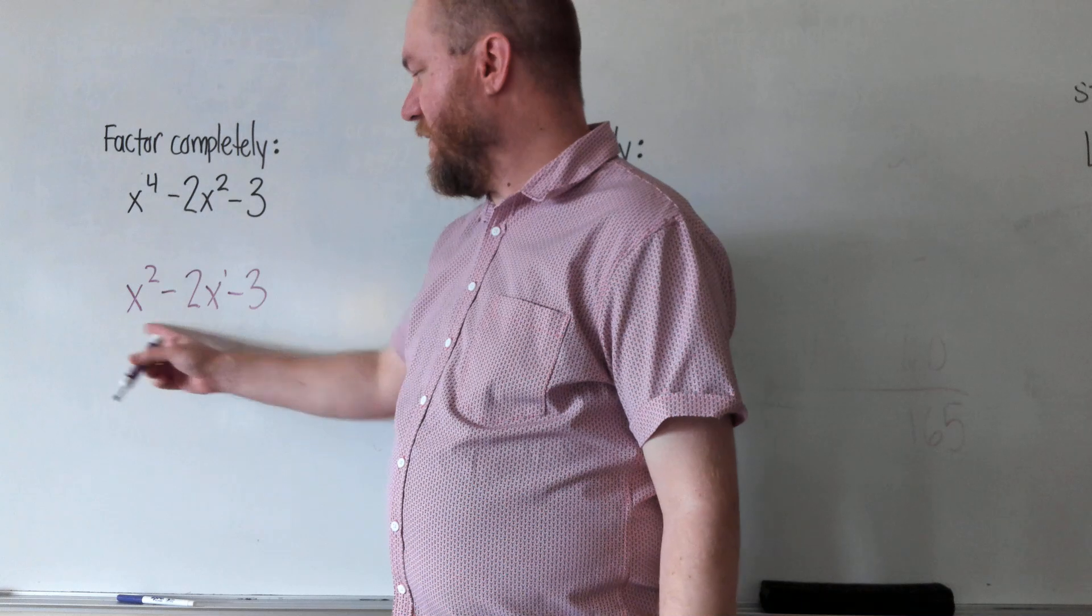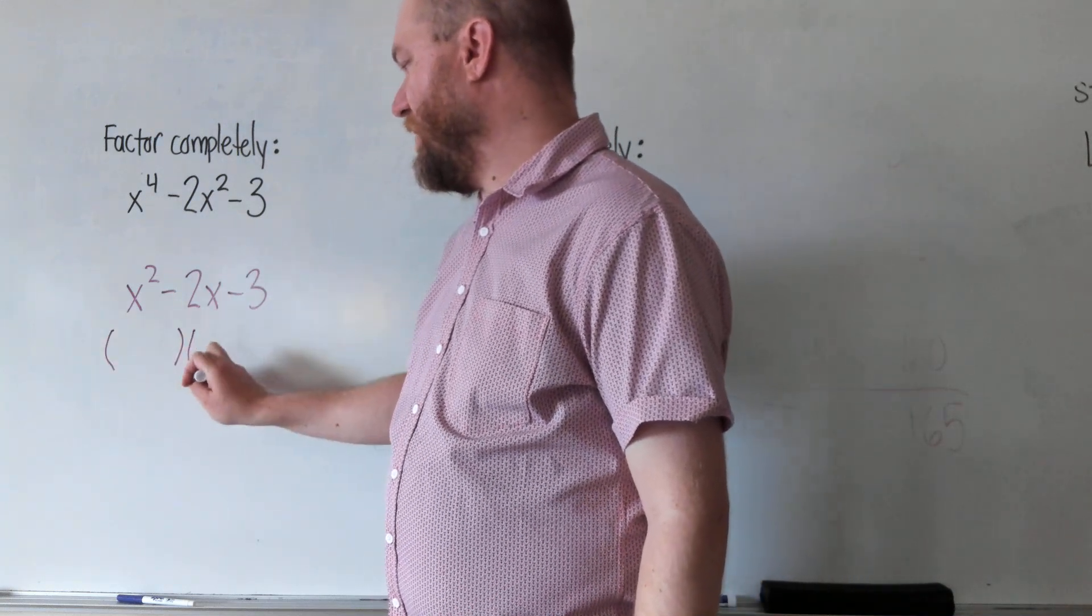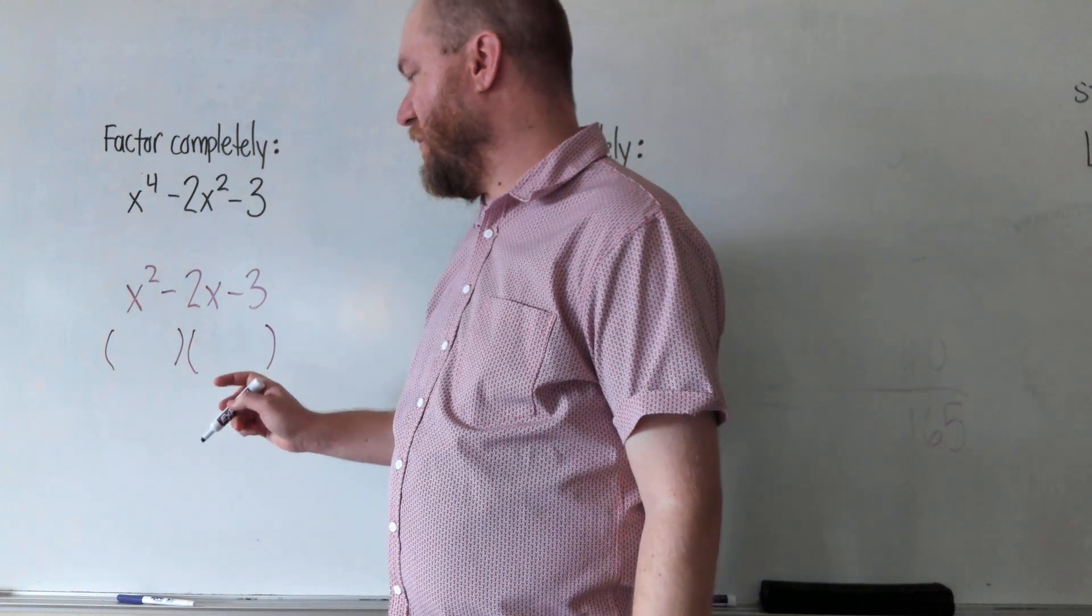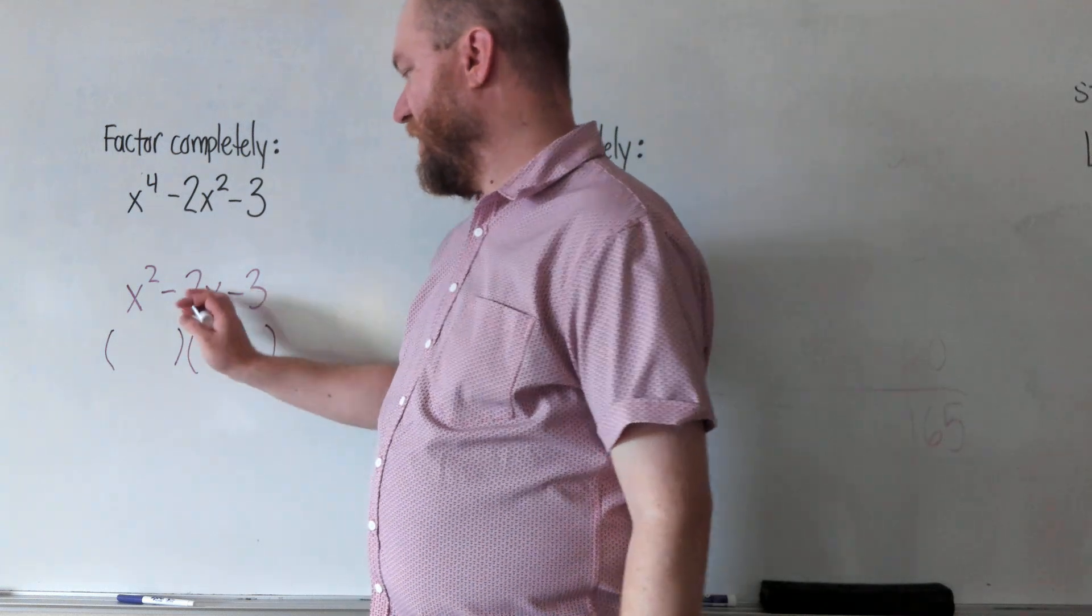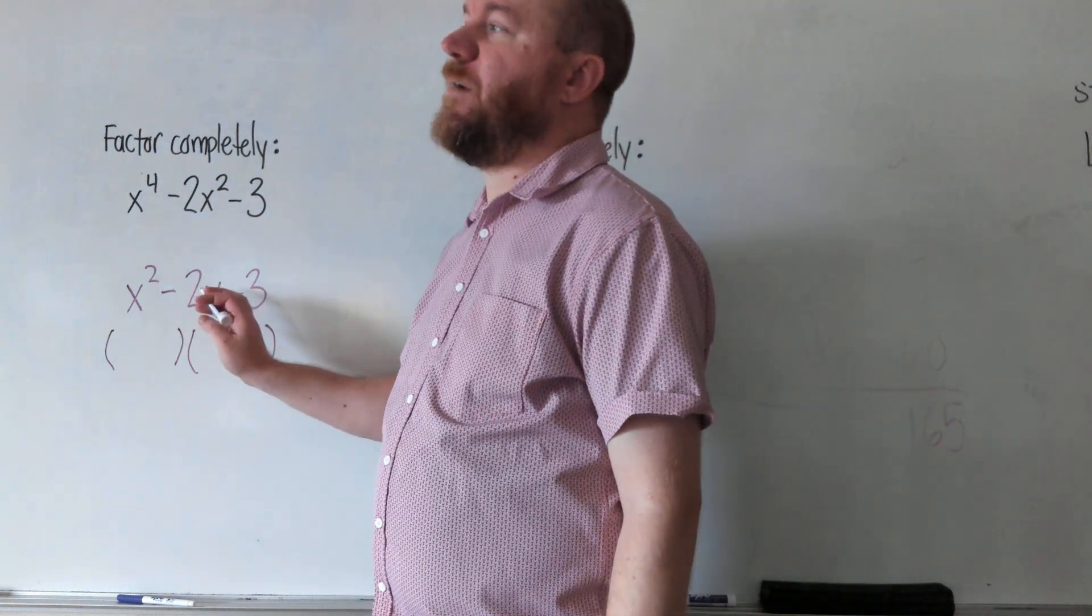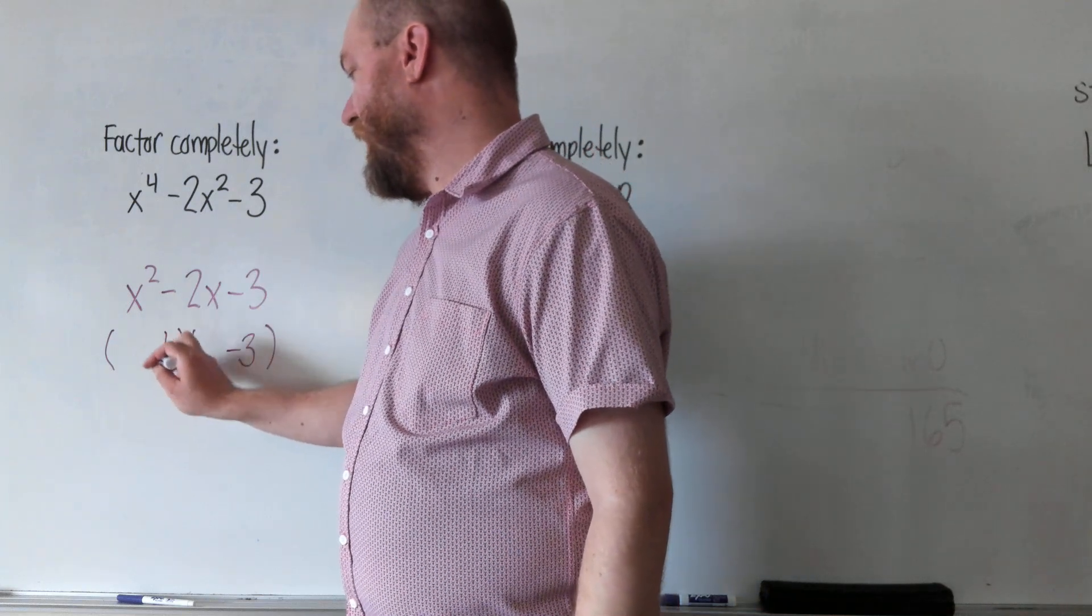So how do you factor this one? Well, we ask ourselves, what are two numbers that multiply to negative 3 that add up to negative 2. In this case, two numbers that multiply to negative 3 that add up to negative 2 will be negative 3 and positive 1.